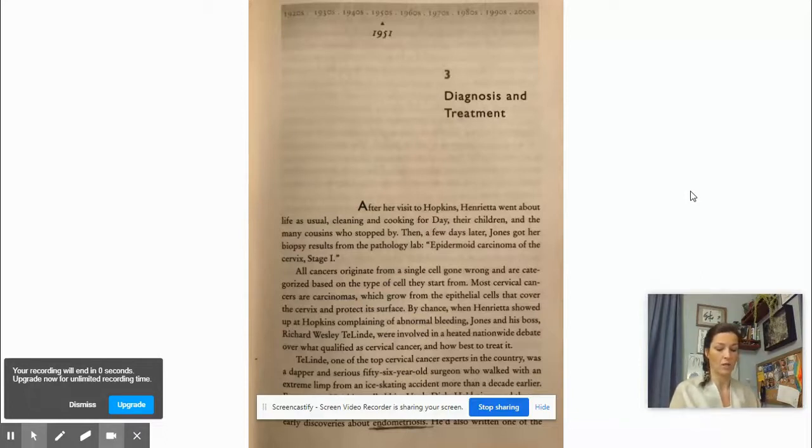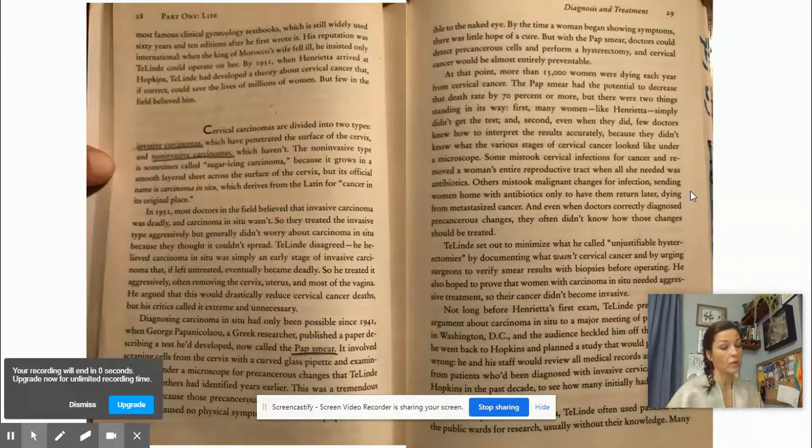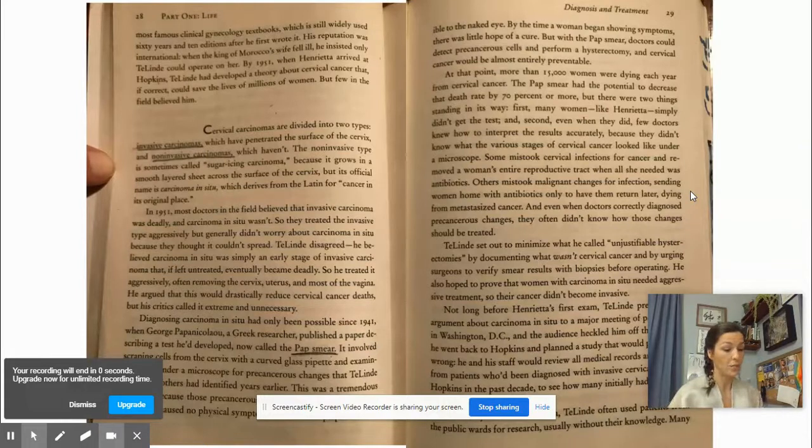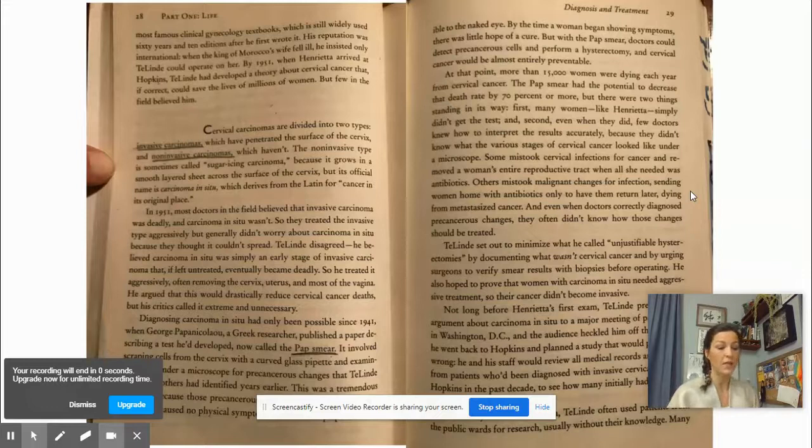Talinde, one of the top cervical cancer experts in the country, was a dapper and serious 56-year-old surgeon who walked with an extreme limp from an ice skating accident more than a decade earlier. Everyone at Hopkins called him Uncle Dick. He pioneered the use of estrogen for treating symptoms of menopause and made important early discoveries about endometriosis. He'd also written one of the most famous clinical gynecology textbooks, which is still widely used 60 years and 10 editions after he first wrote it. His reputation was widely international.